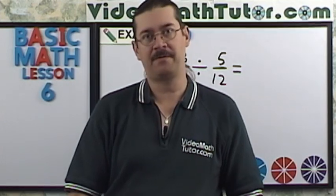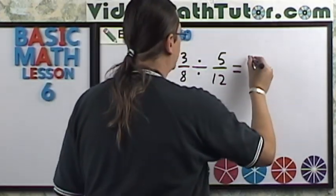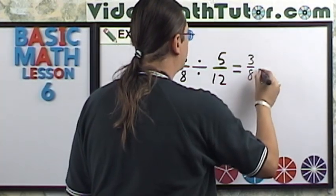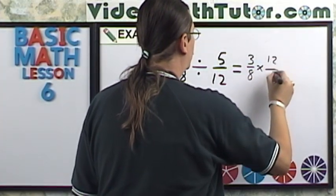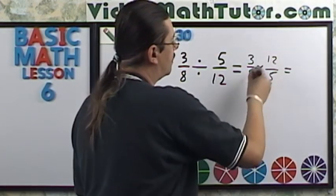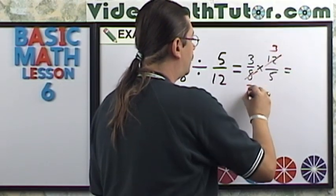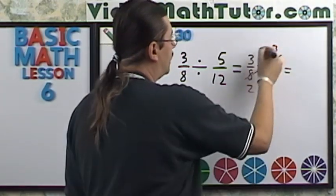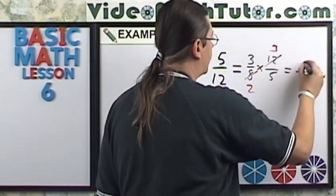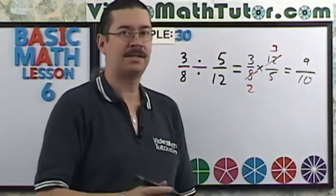Now let's divide some more fractions. Over here, let's invert and multiply. So I have three-eighths times twelve-fifths. Now let's do some cross-canceling here. There's a four in eights and twelve. So we're left with three on top and a two on the bottom. Let's multiply these straight across. You're left with nine-tenths.